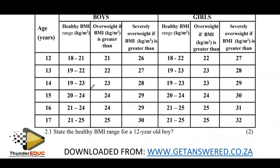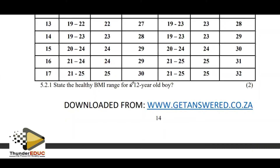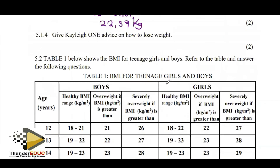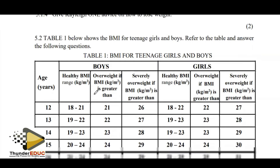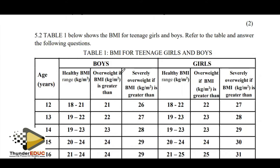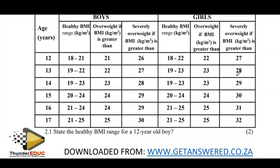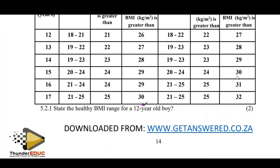They state the healthy BMI range of a 12-year-old boy. Below shows the BMI for teenage girls and boys — refer to the table and answer the questions. We have the healthy BMI range, overweight, and severely overweight categories. Looking at the 12-year-old boy column on the boys' side, the healthy range is 18.2 to 21.